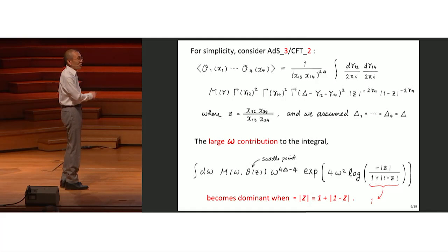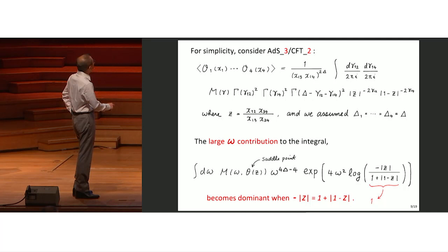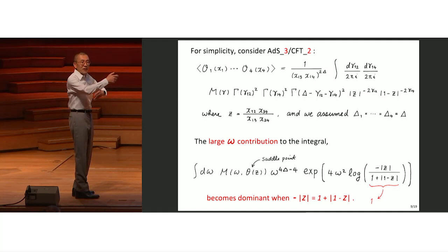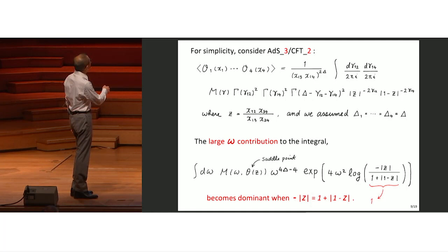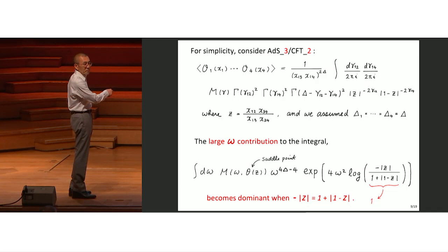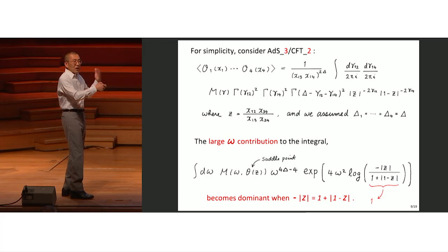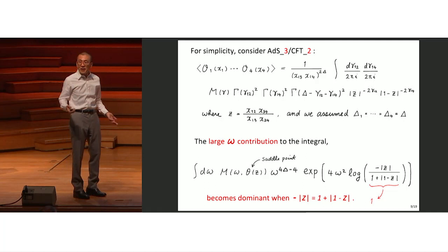You approximate the gamma function by Stirling's formula, and when gamma is large everything sums up to an exponential. The angle integral can be done by a saddle point, and it becomes a function of the cross-ratio of the four points. You get this amplitude: one part is a power, one part is exponential, so there is a competition between power and exponential. Provided this is order one, you land on the saddle point where omega is of order delta — not very large in general. To make the saddle point very large, where we can probe the regime of interest, we need to make a certain combination small.